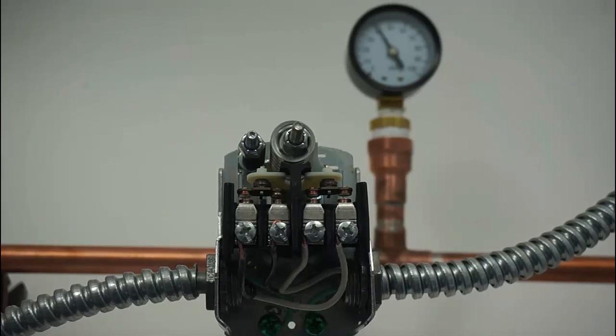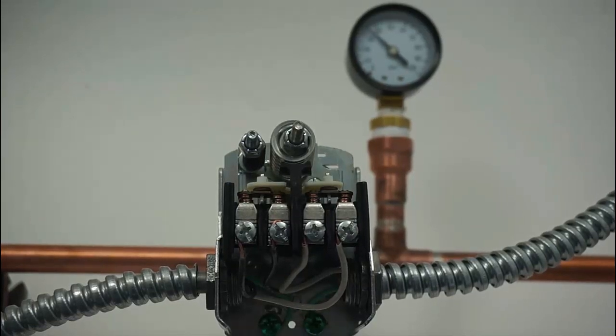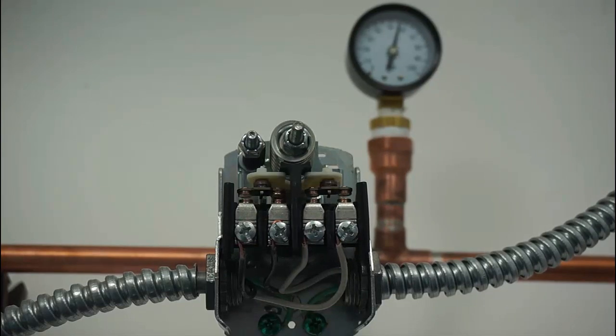After installation, connect power to the switch and watch it cycle a couple times to ensure it is working correctly. Contacts will open when the switch reaches 50 PSI, close when it drops below 30 PSI.